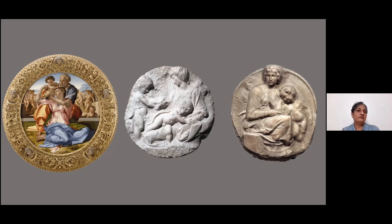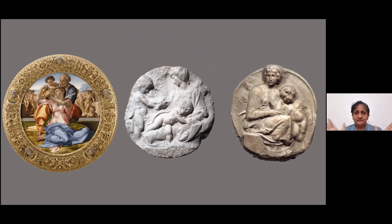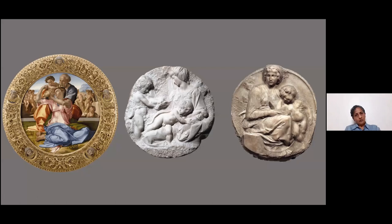In the two reliefs, Michelangelo concentrates the figures primarily in the foreground. There is no real interest in the background — at most, you could say you have St. John the Baptist behind the Virgin. Otherwise, everything is happening on the surface, in the foreground. In the relief sculpture, you see Michelangelo devising his composition in sculptural terms.